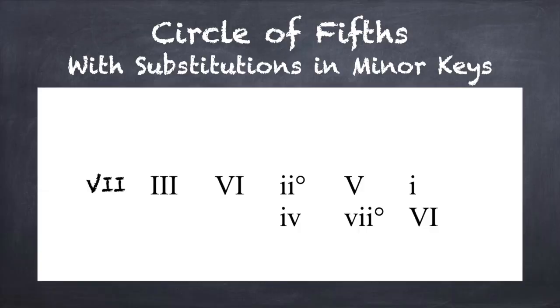The 1 chord may be followed by any chord. In minor keys, the same progressions are used, but the chord qualities change. In minor keys, there is often the subtonic 7 chord, which can comfortably precede 3 or 1. The leading tone 7 diminished chord precedes 1, as in the chart above.